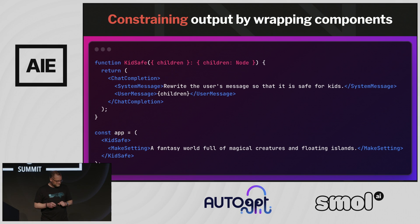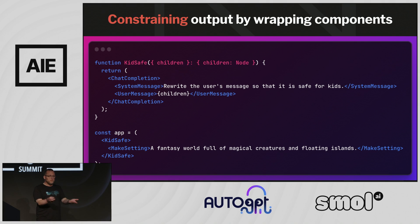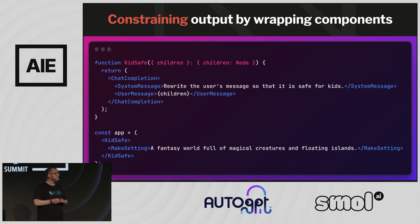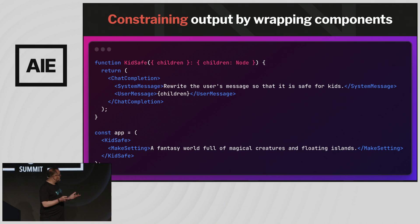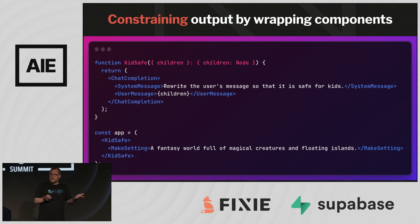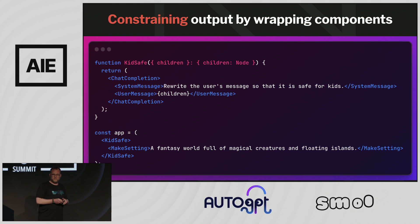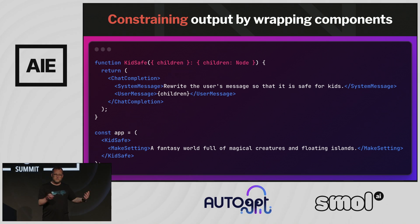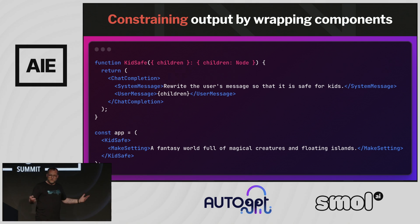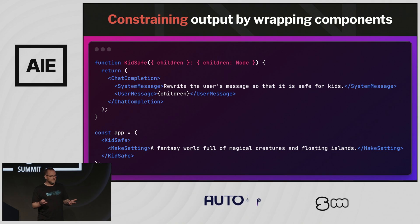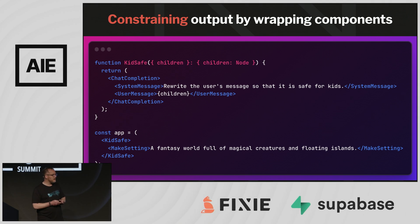One thing you can do with this tree-based structure in AI JSX is wrap one component in another to constrain the latter component's output. We define a kid-safe component that takes a system message saying rewrite the following text so it's safe for kids, and places the child components into the user message of that prompt. When you wrap any component in a kid-safe component, it automatically rewrites the output to be kid-safe — very powerful composition.